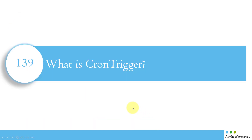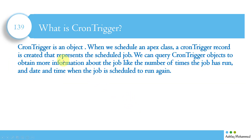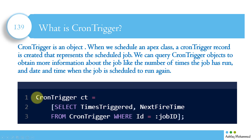What is CronTrigger? CronTrigger is a Salesforce system object. When we schedule an apex class, a CronTrigger record is created that represents the scheduled job. We can query the CronTrigger object to obtain more information about the job — such as how many times it has run and the date and time when the job is next scheduled to run. For example: SELECT TimesTriggled, NextFireTime FROM CronTrigger WHERE Id = :jobId.